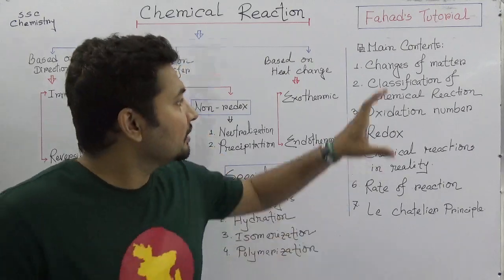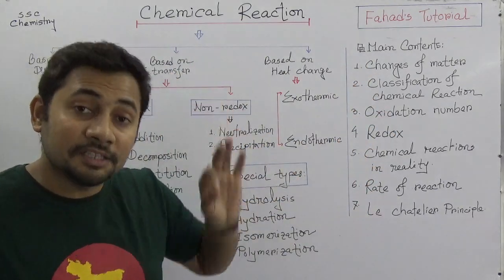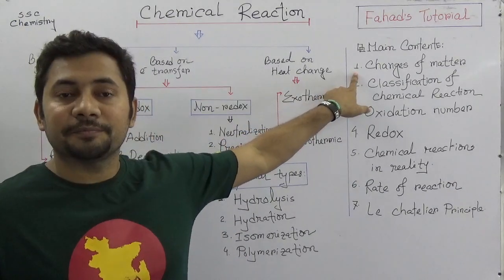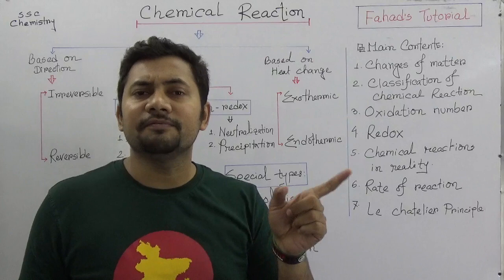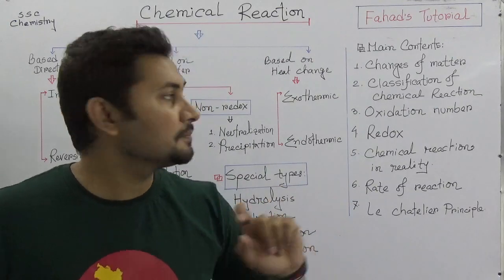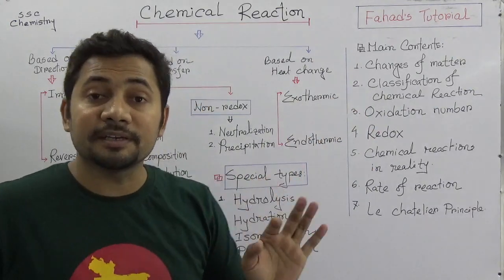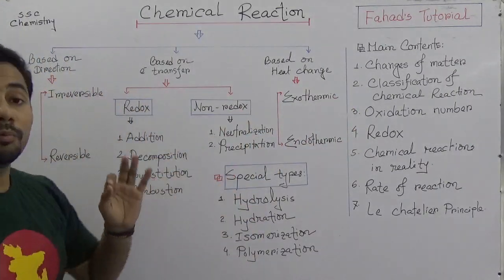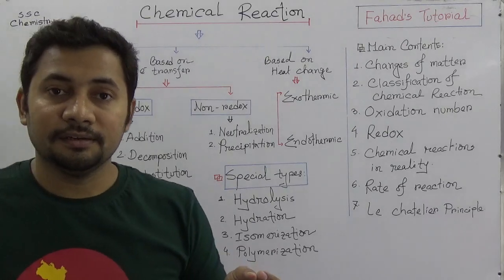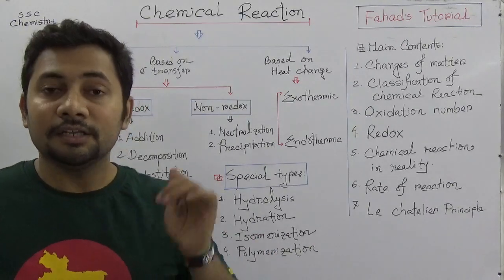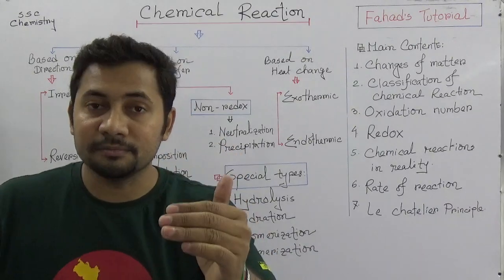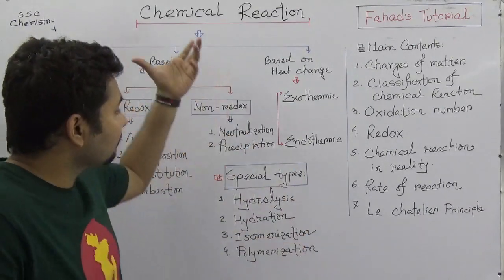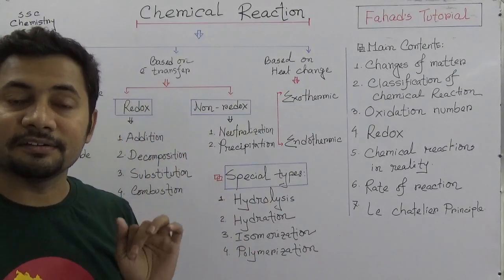Most importantly, the contents of this chapter include the changes of matter. We know that there are two types of changes in matter: physical change and chemical change. The classifications of chemical reactions follow from this. I am taking this class in an academic way following the syllabus books, but there are a lot of other types of chemical reactions available.